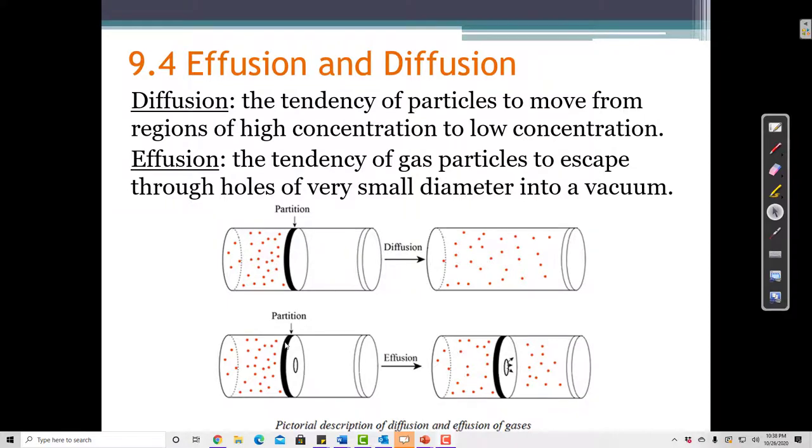Effusion is where I have lots of gas particles on one side of the partition again, but now the partition has a small hole in it. The rate at which these gas particles can pass through that hole is based on how much mass they have. We can calculate the rate of effusion for different particles based on their mass.